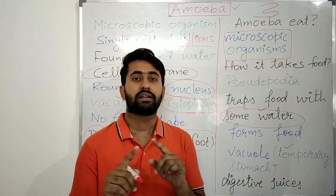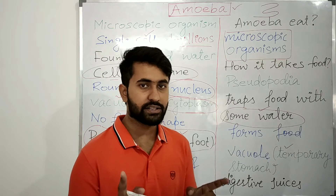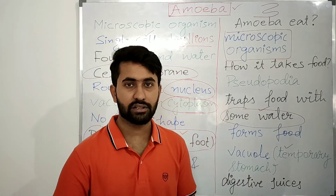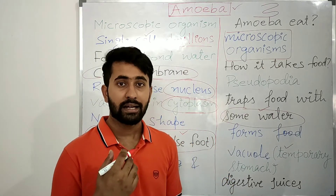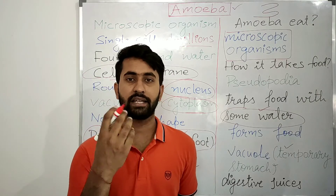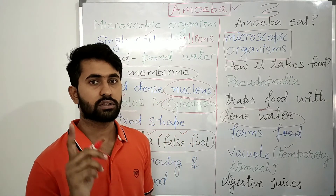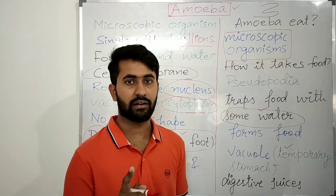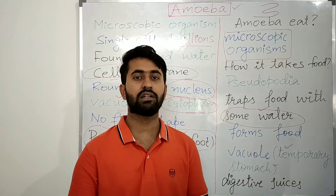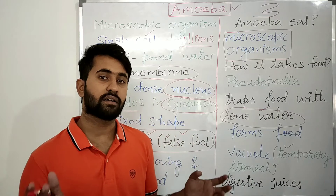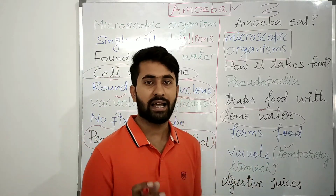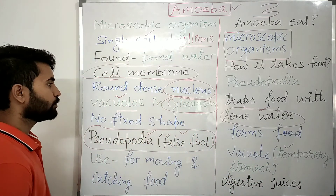The amoeba does not have a fixed place for removing waste from the body. It does not have a mouth for taking food, and it also does not have a fixed place for removing waste. It removes waste with the help of vacuoles.